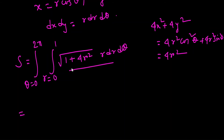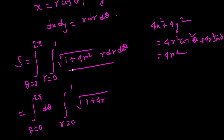Since the integrand is independent of θ, we can integrate separately. The integral becomes: [∫₀²π dθ] · [∫₀¹ √(1 + 4r²) · r dr]. Now for the r-integral, let u = 1 + 4r².